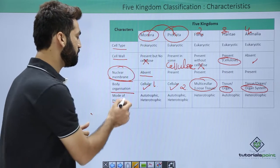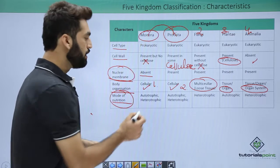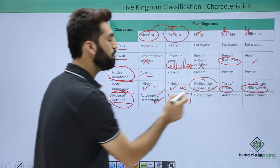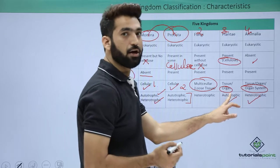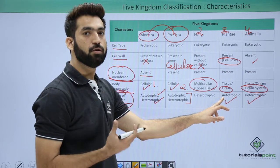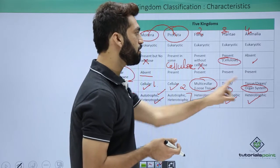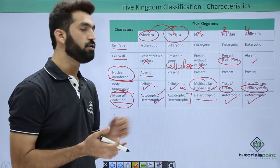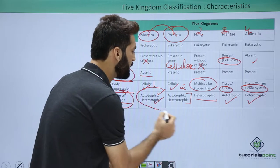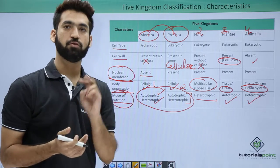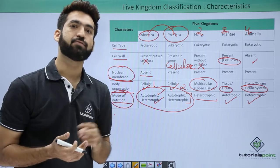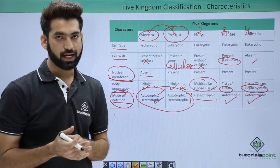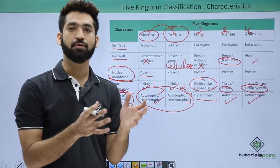Regarding mode of nutrition: in kingdom Monera, both autotrophic and heterotrophic modes are present, and this is also the case in kingdom Protista. Plants are completely autotrophic — autotrophic is also called holophytic, meaning you prepare your own food. Animals are completely heterotrophic. Fungi are always heterotrophic. There are two modes of autotrophism: photo-autotrophism, which is synthesis of food using light, and chemo-autotrophism, using chemical energy.